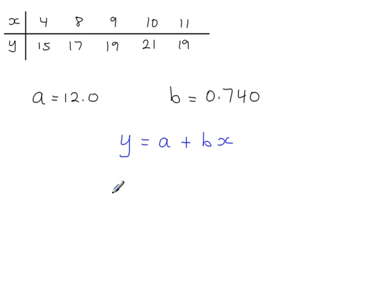y is equal to a plus bx. You must write down the final equation, substituting these two values in. So y is equal to 12.0 plus 0.740x. And you've got to put the x in there. So we put the a value here, put the b value on this side. And there you go. That's the regression equation.